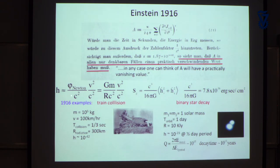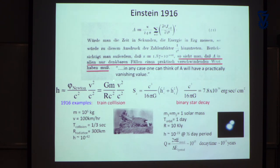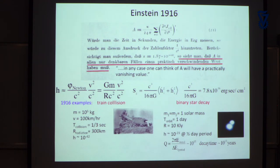The strain from a dynamical situation is proportional to G times mass divided by distance times C squared — that quantity GM/RC² is the dimensionless constant of how strong gravity is. In this room that number is around 10⁻¹⁰; on the surface of the Sun it's about 10⁻⁶; near the horizon of a black hole it's about 1 — quite a dramatic change.